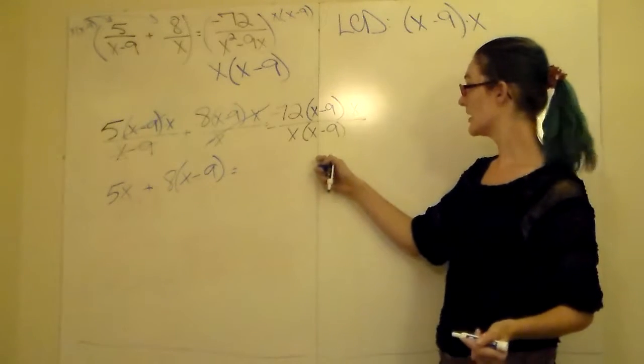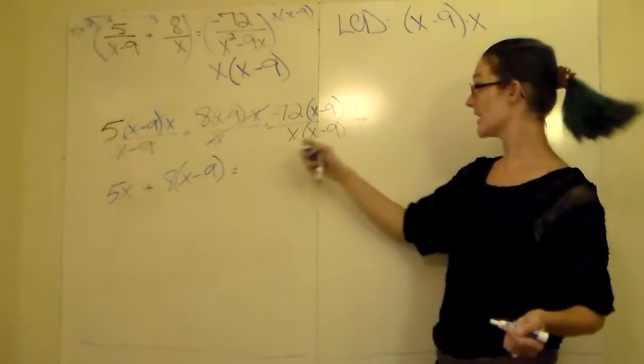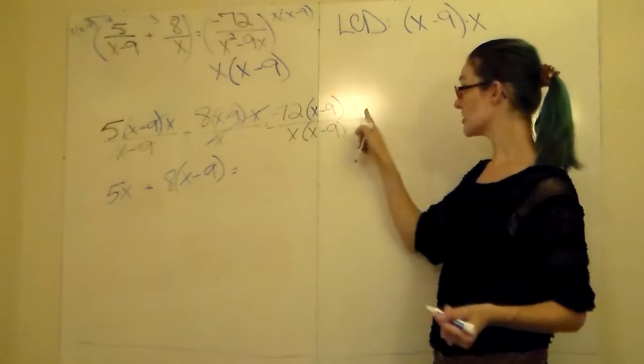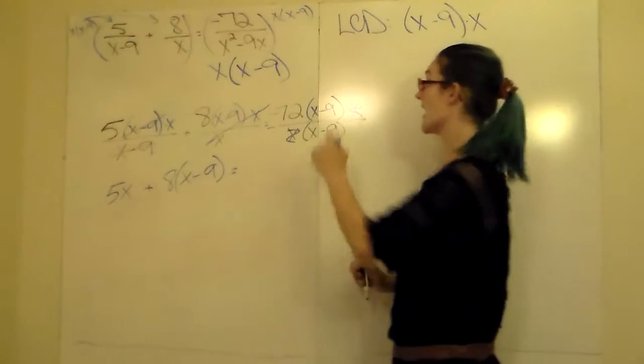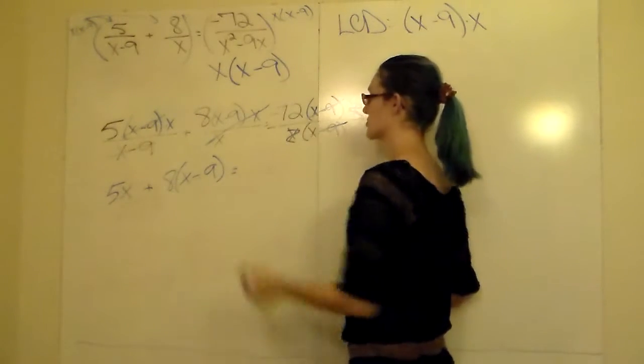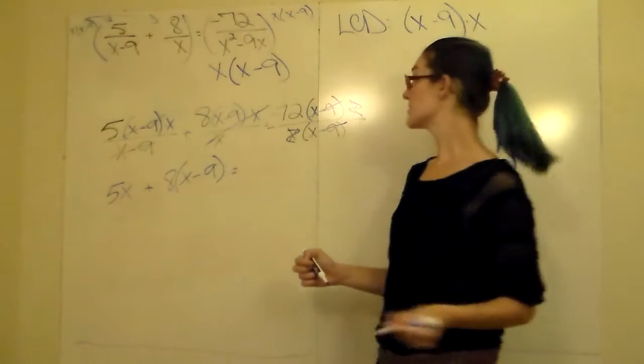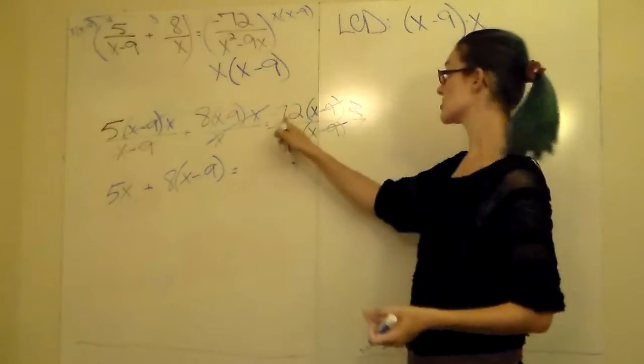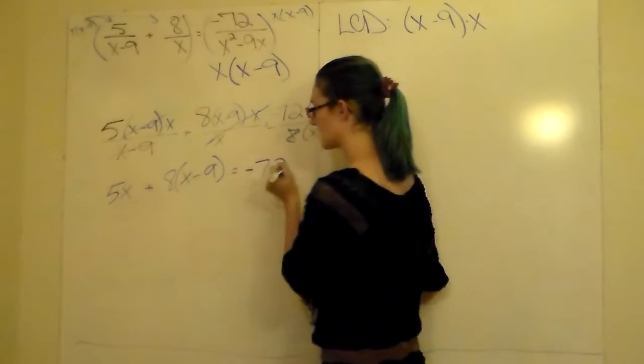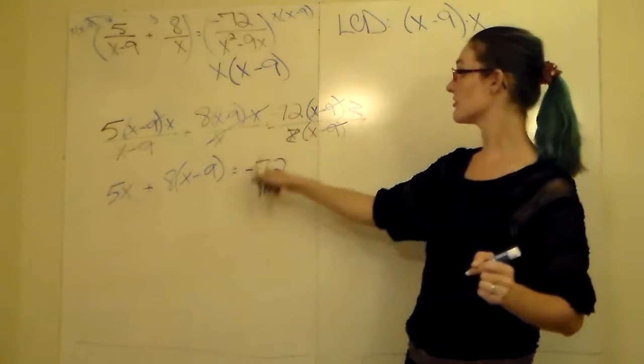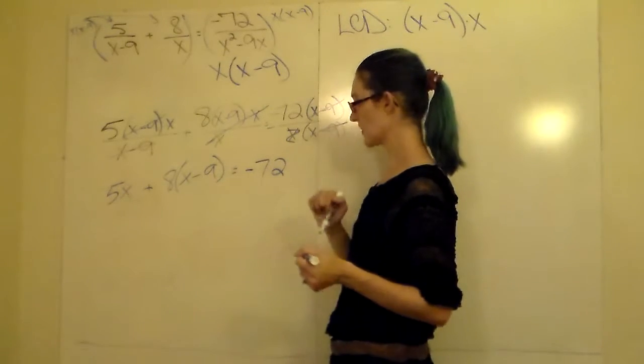Equals over here, negative 72 times x minus 9 times x, all divided by x times x minus 9. The standard x's, all by themselves, they can reduce away, and the x minus 9s can reduce. And again, the reason they're reducing is because anything divided by itself is 1. So when I reduce, I'm essentially multiplying negative 72 by 1, which is still negative 72. Be extremely careful that that sign falls and you don't lose it anywhere.